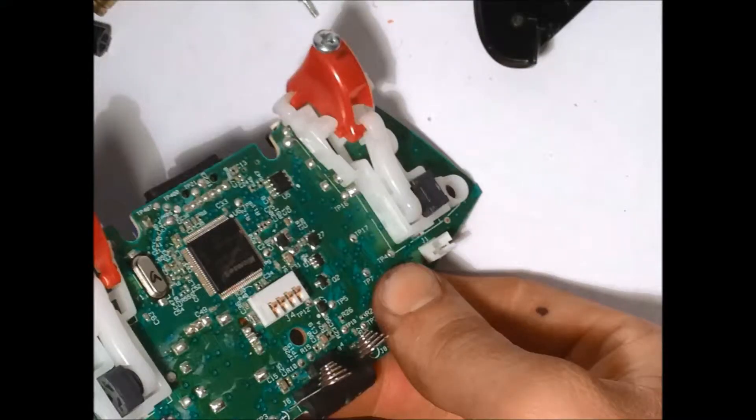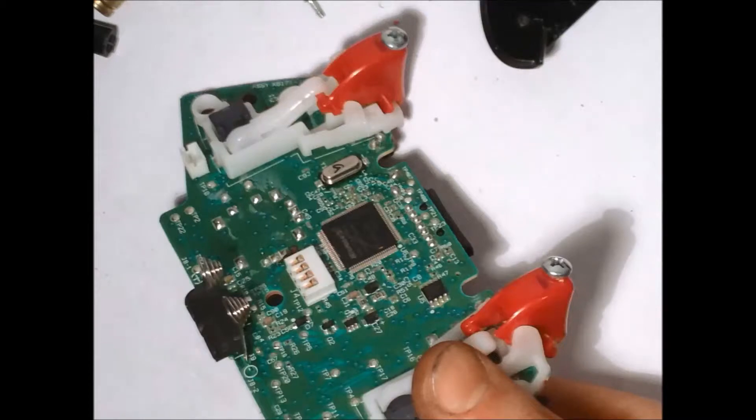Now, to remove the triggers. To remove the triggers, you're going to push this rod down and to the right as well to move it out. Same goes to the other side. Push it down and out.